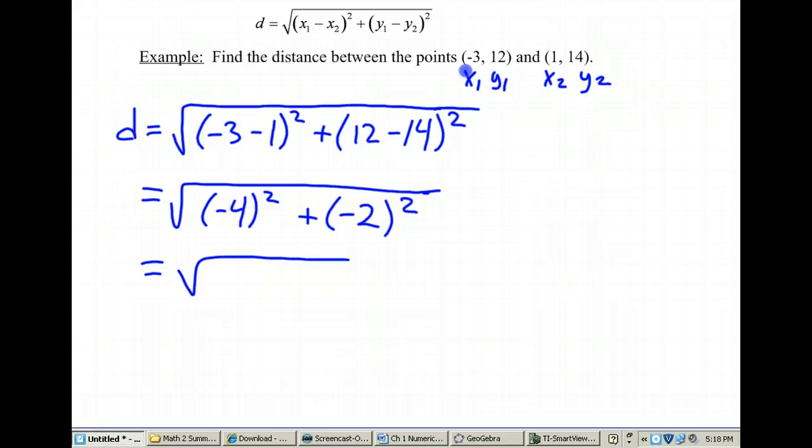So continuing to simplify, negative 4 squared, we get 16, plus negative 2 squared, that's 4. So my distance, adding 16 and 4, is 20. So the square root of 20 is what I end up getting.